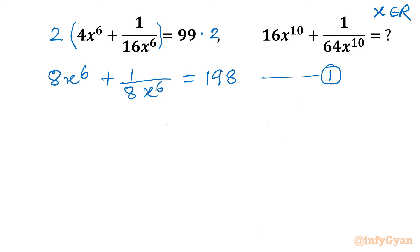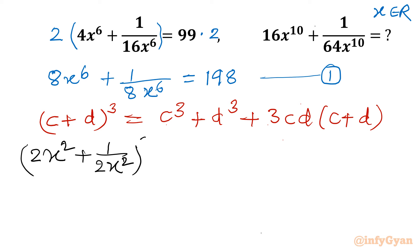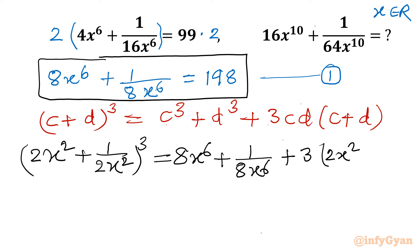Now I will use one algebraic identity formula: (C+D)^3 equals C^3 plus D^3 plus 3CD(C+D). So for the expansion of (2x^2 plus 1 over 2x^2)^3, the expansion will be (2x^2)^3 which is 8x^6, plus (1 over 2x^2)^3 which is 1 over 8x^6, plus 3 times 1 times (2x^2 plus 1 over 2x^2). So it is matching with our known equation. Now it is substitution time.